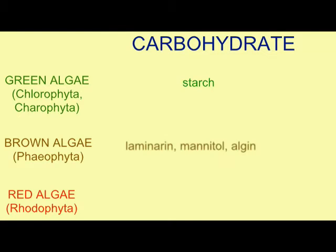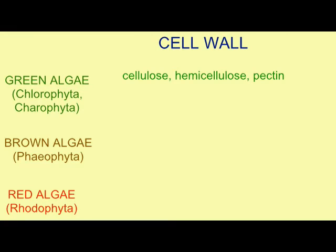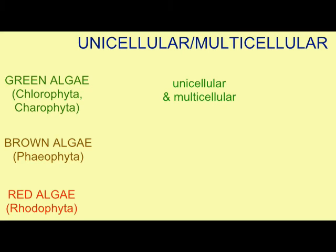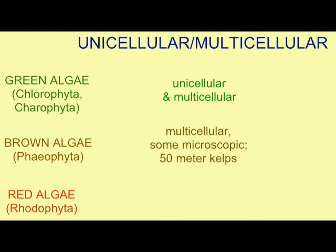They differ in the carbohydrates that they use for storage. They differ in the molecules that they incorporate into their cell walls. They differ in whether they can be unicellular or multicellular, with the brown algae known as kelps being able to reach lengths of over 50 meters, and including a number of very specialized tissues which the other groups lack.